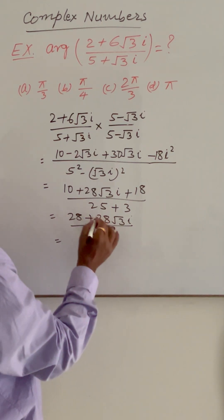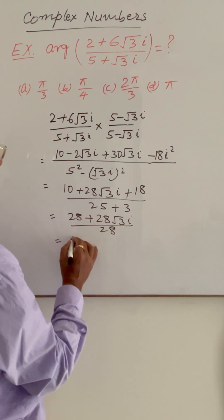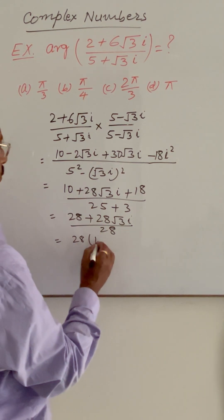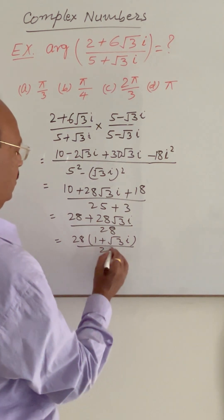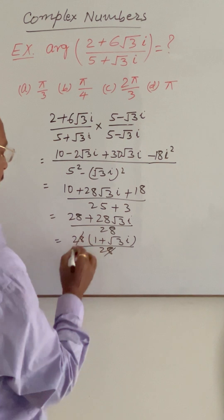Here 28 will be cancelled from numerator and denominator. So this is 1 plus root 3i upon 28 cancel.